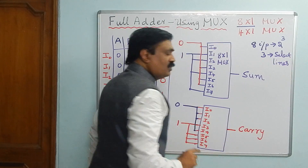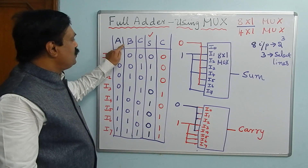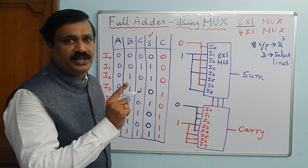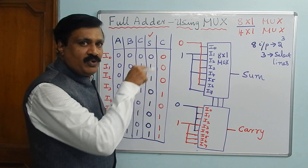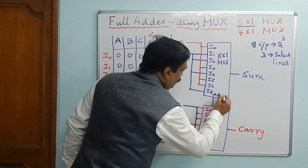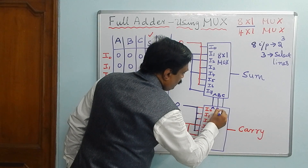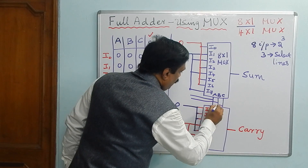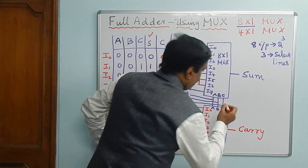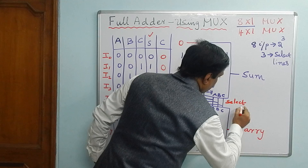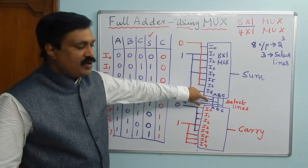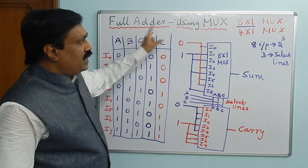Now we have to give the select lines. Connect A, B, and C as the select lines. Since both MUXes form a single circuit for the Full Adder, connect the same select lines to both: A, B, and C are connected to the select lines of both the Sum MUX and the Carry MUX. Now inputs are given, select lines are given, and outputs are there — this is a Full Adder implemented using multiplexers.